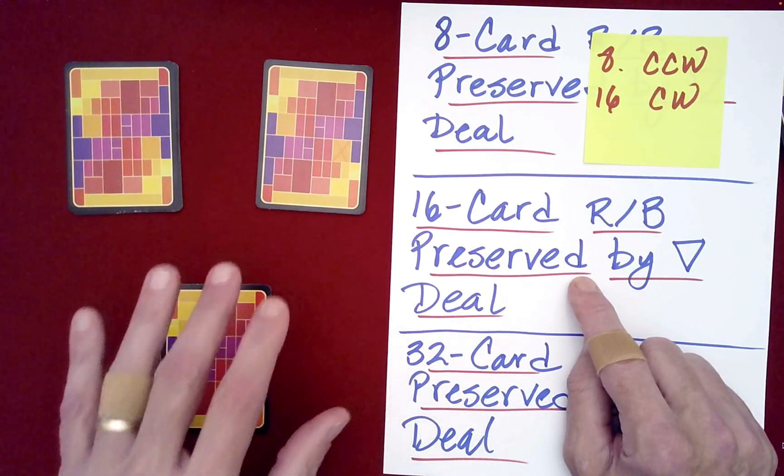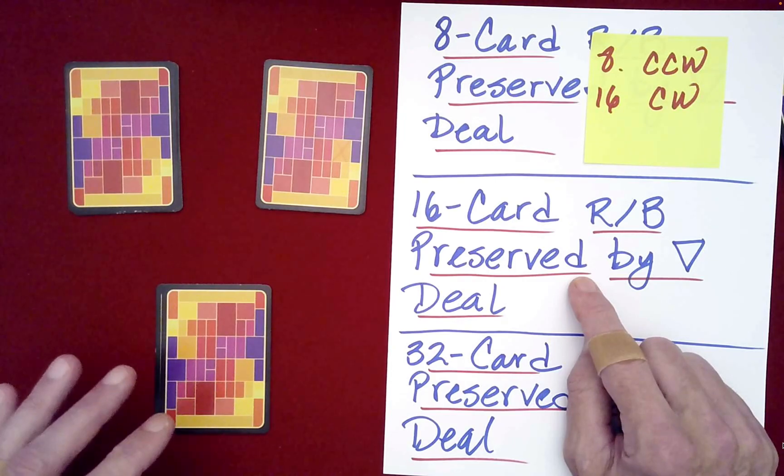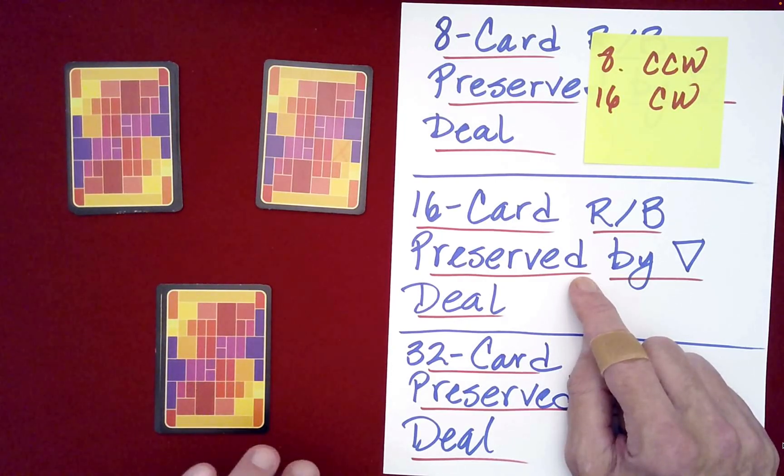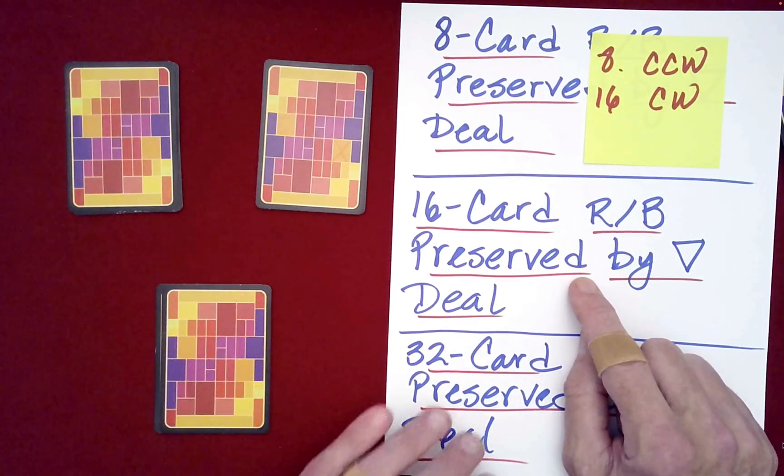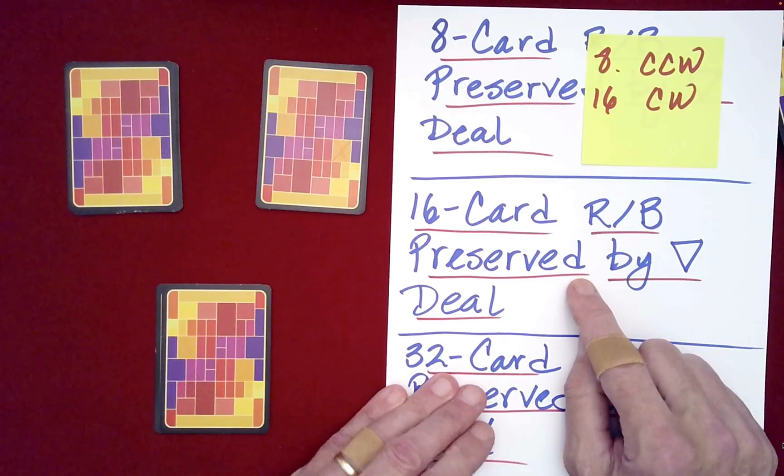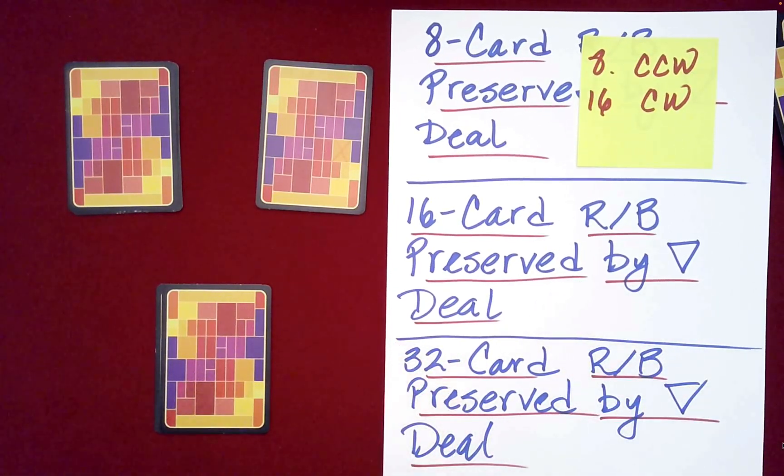And then if you go to the 16 pile, one of the 16 piles next, you can say, well, let's shake things up. Let's see, I think we stacked counterclockwise last time. Why don't we stack clockwise, right, just to mix things up. Okay, so you just, you have it play into the narrative that you're kind of randomly treating each of these, right?